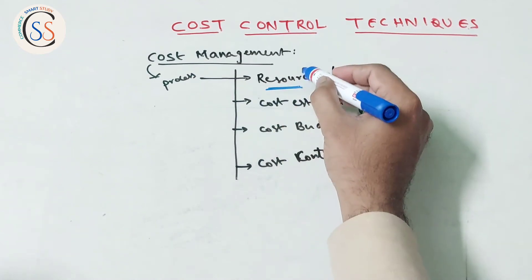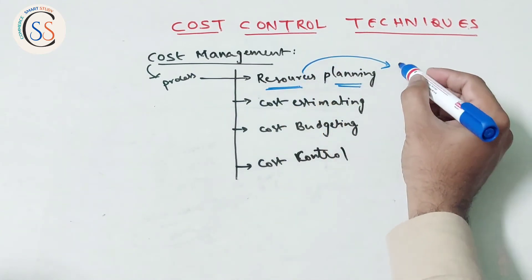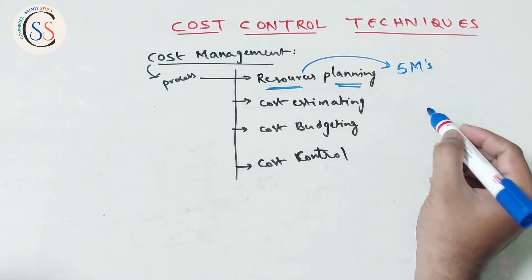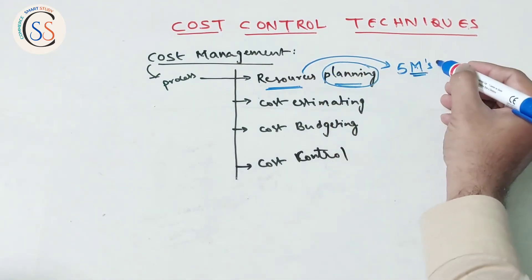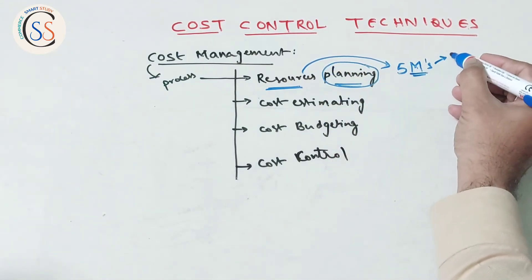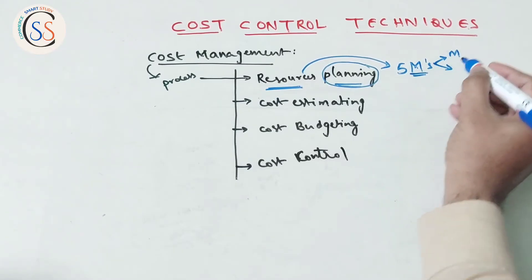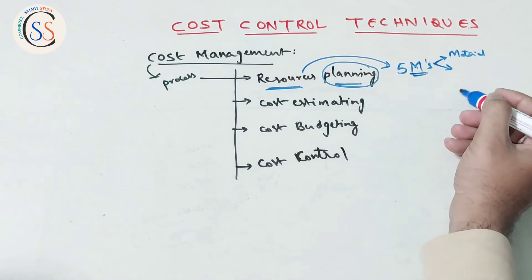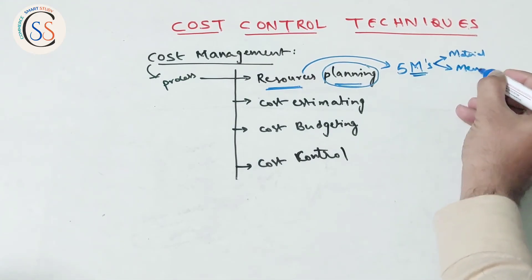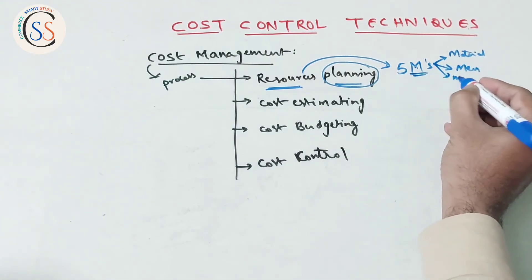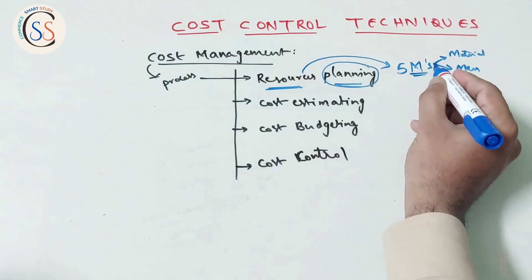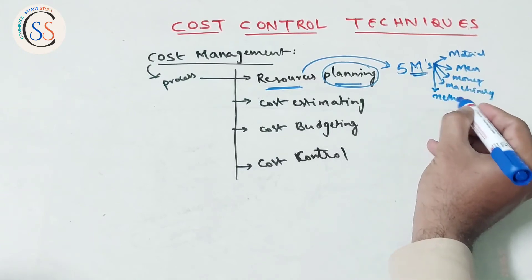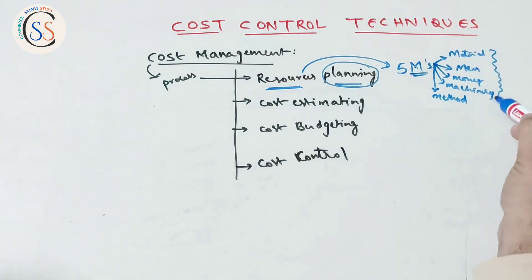The first step is resource planning. Resources are divided into five M's to plan. The five M's are: first, Material; second, Manpower or Labor; third, Money or Capital; fourth, Machinery; and fifth, Methods. So resource planning involves planning these five M's.